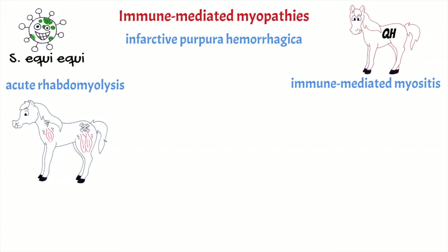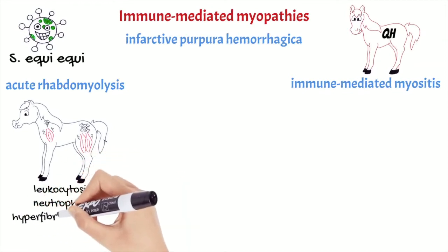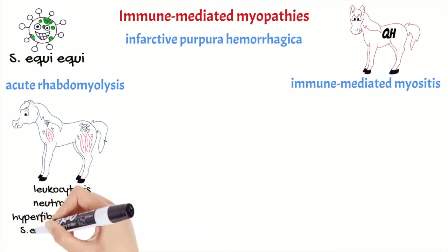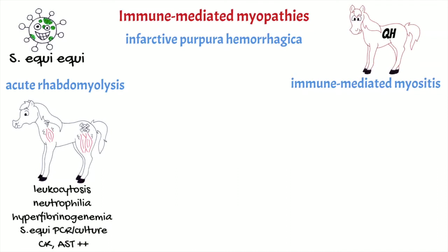For the diagnosis of strangles we will find leucocytosis, neutrophilia, and hyperfibrinogenemia. PCR and culture of nasopharyngeal secretions may be positive for Streptococcus equi. Antibodies for M-protein will not be high in this case due to the acute nature of the disease. For the diagnosis of rhabdomyolysis we will find an increase of muscular enzymes, but muscle biopsy is not useful.